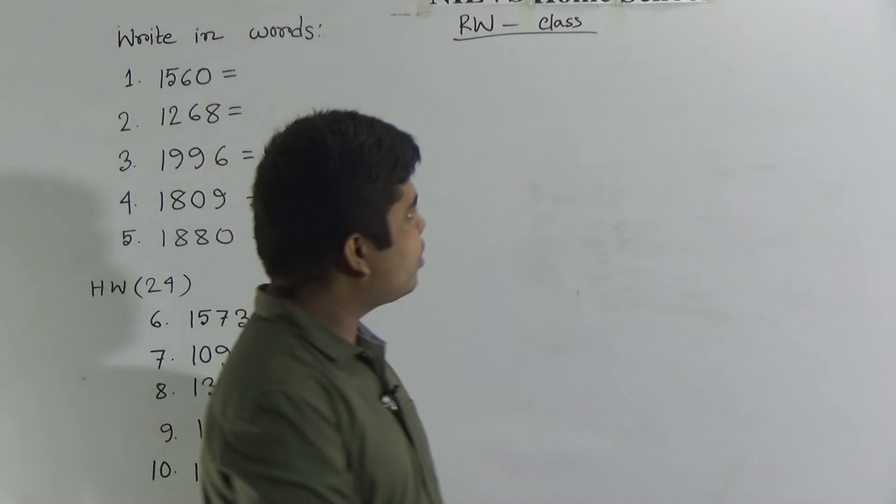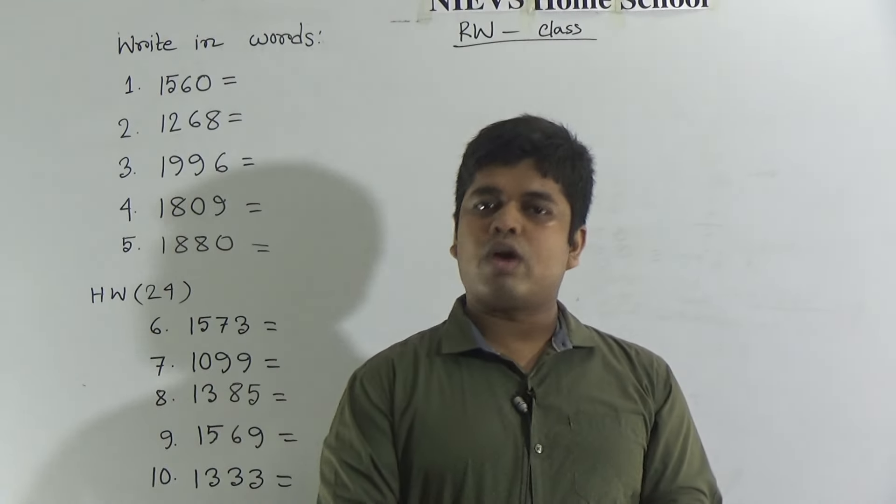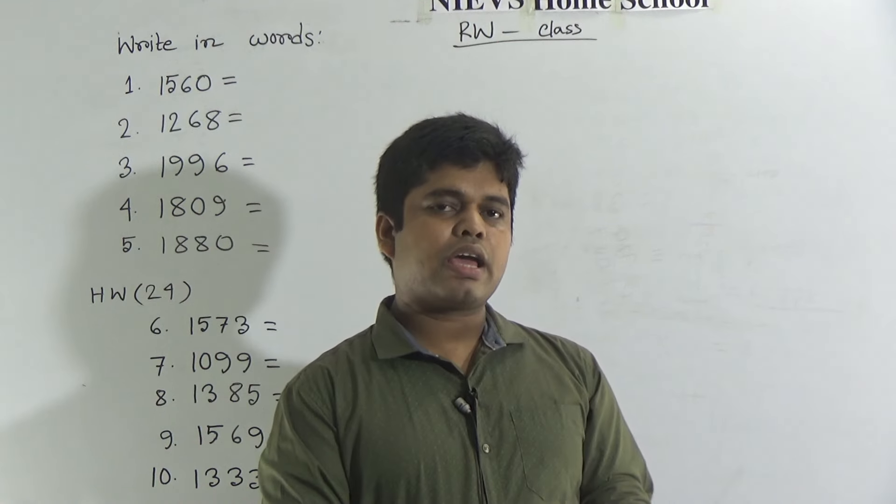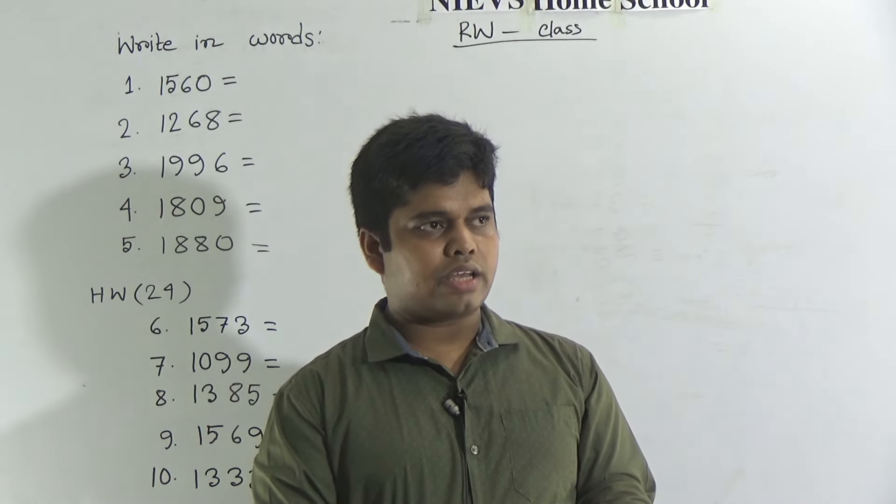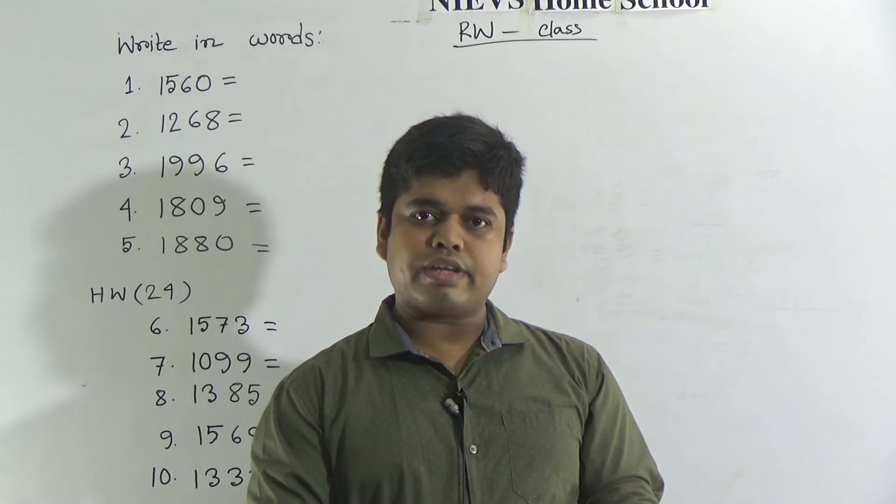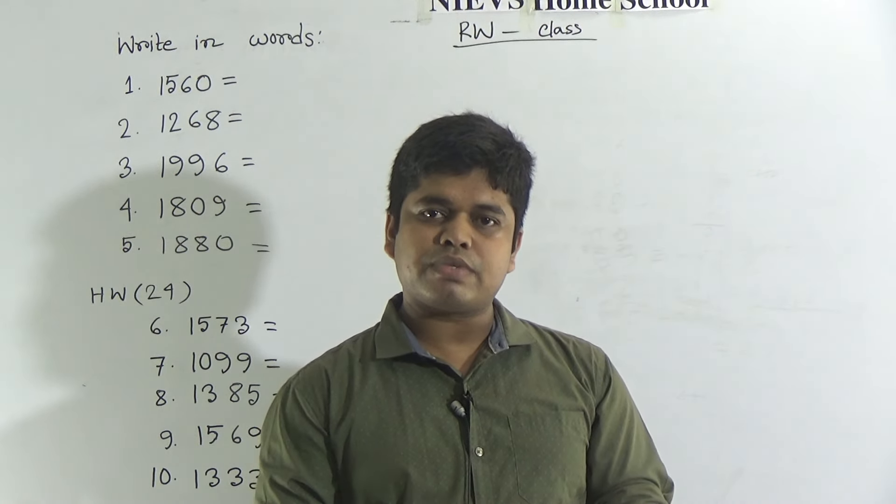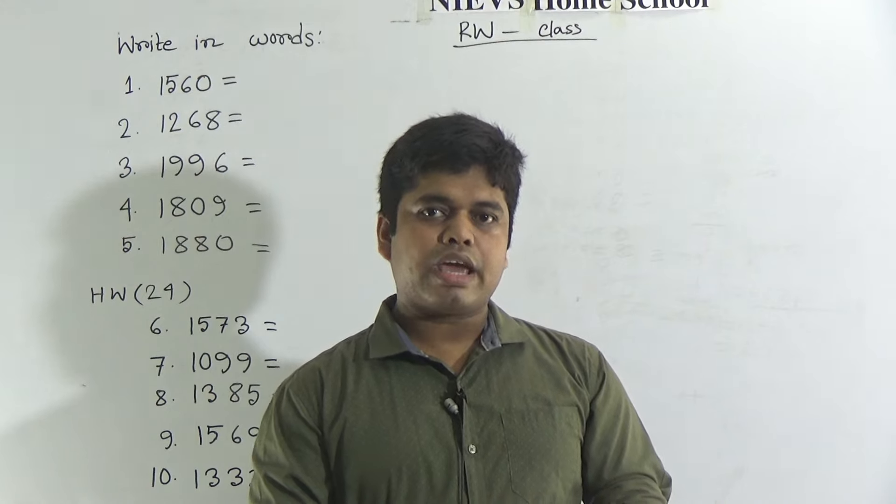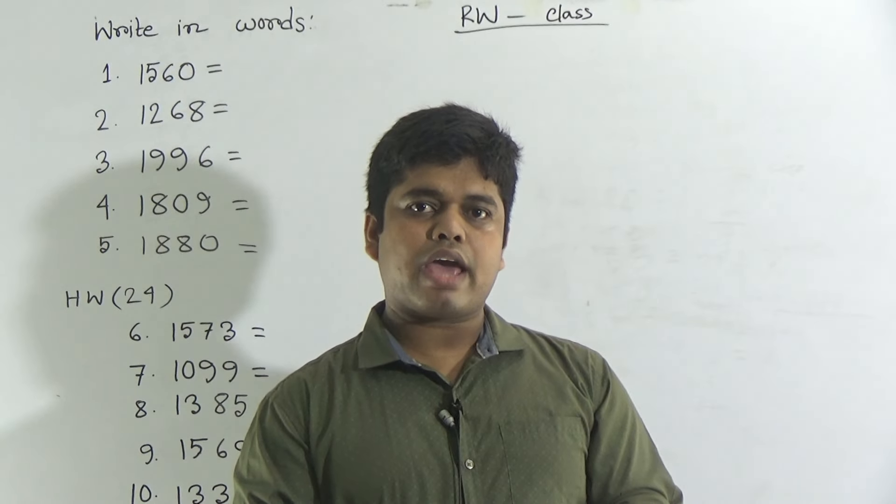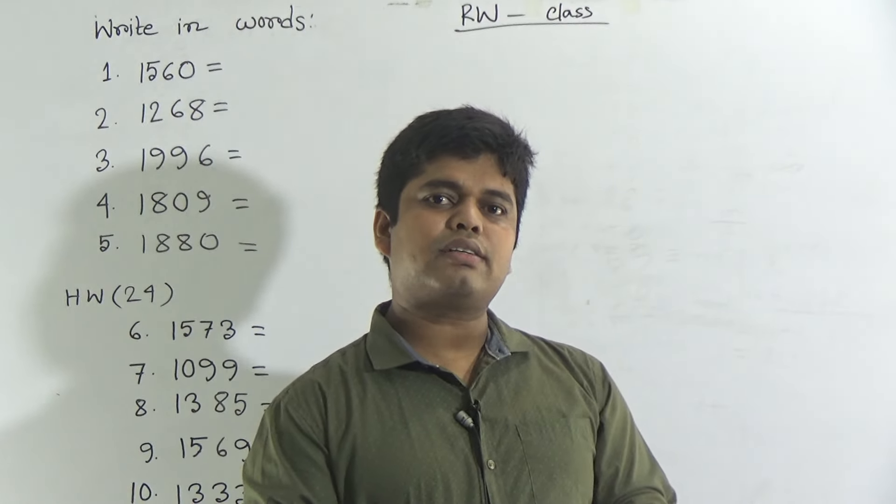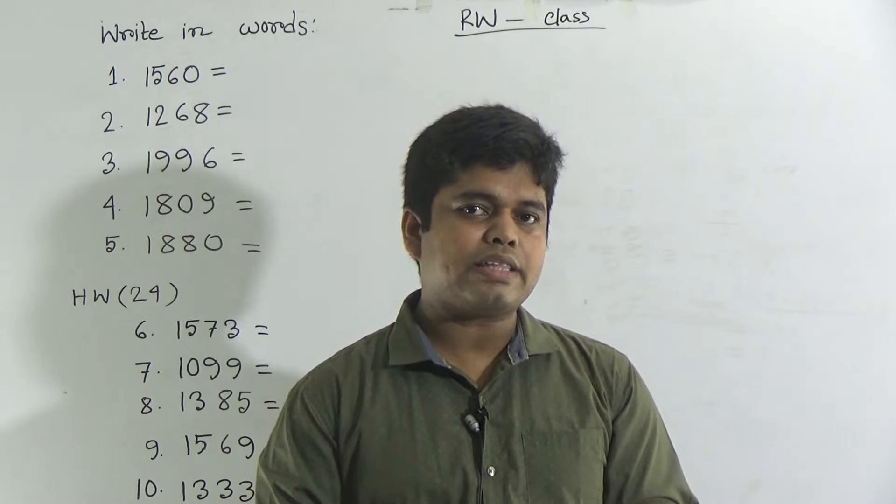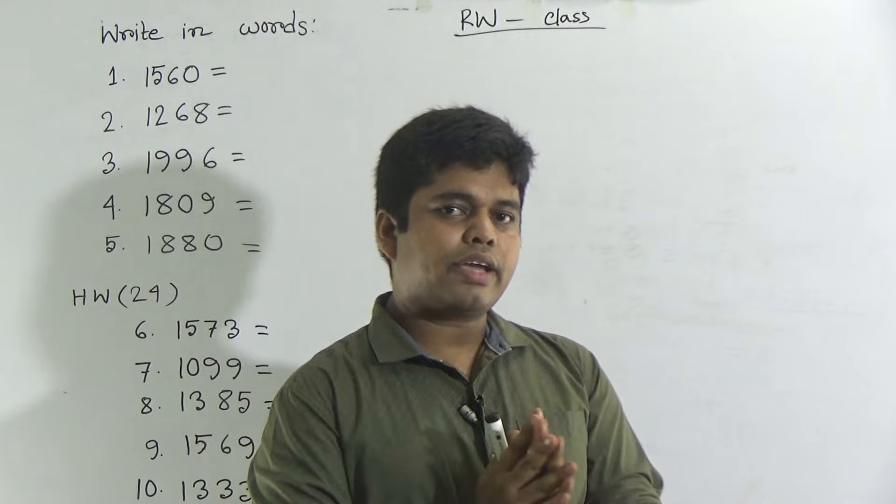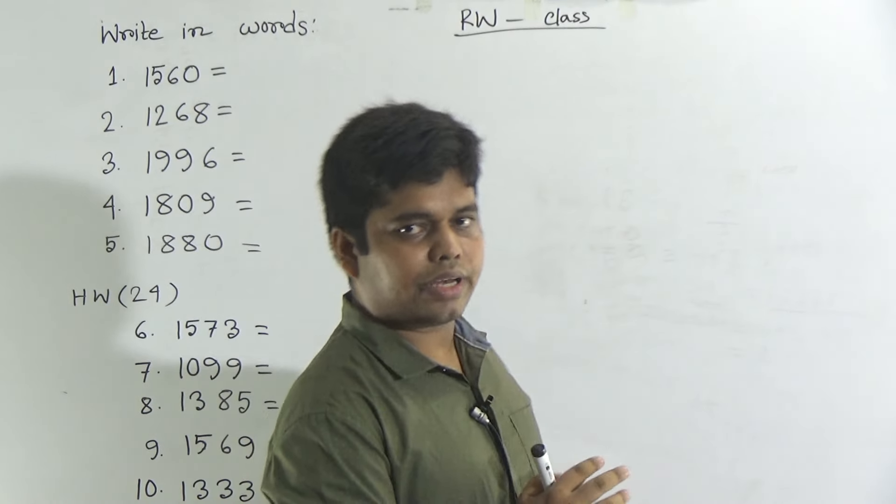Before starting to solve our class, at first we need to know the spelling of 1 to 9 digit and 11 to 19 digit, then 20, 30, 40, 50, 60, 70, 80, 90 and 100. After that we learn the spelling of 1000. If we learn this properly, then we can easily write in words of the following number.